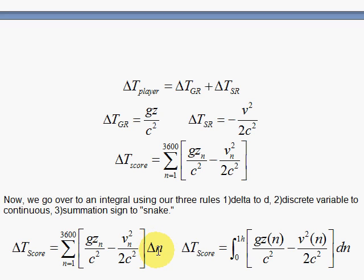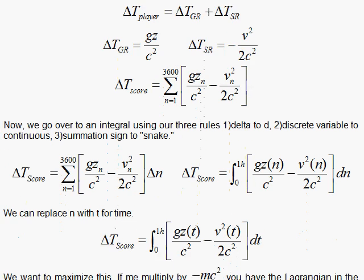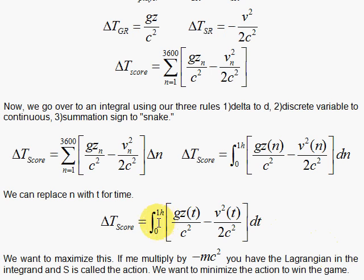By doing that, I'm going to move over to an integral. Here, delta N, where delta N is one, one second, because we're advancing by one second, we go to the integral by using our three rules. One: you change the delta N to a dN. Two: you promote N to a continuous variable, so you rip off the indices and put them in there as arguments. z is a function of N, the velocity is a function of N, and the velocity gets squared. Then you turn the summation sign into a snake. So we do that and we have this nice result here, and that's the delta T of the score, and this needs to be maximized.